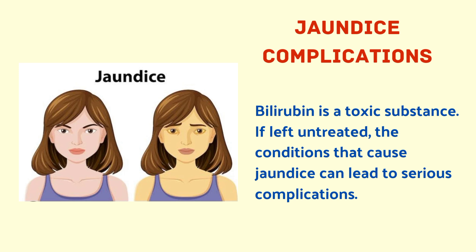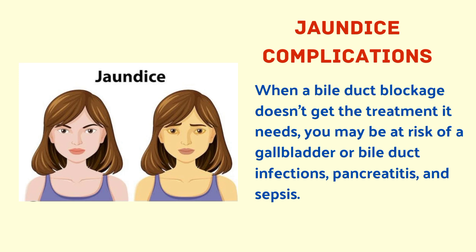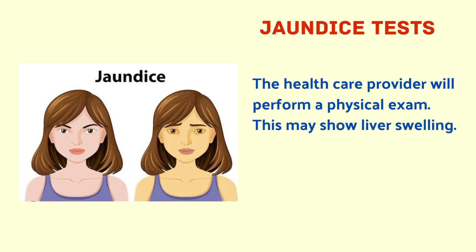Now let us see the complications of jaundice. Bilirubin is a toxic substance — if left untreated, conditions that cause jaundice can lead to serious complications. Untreated hepatitis can eventually lead to cirrhosis, liver failure, and increased risk of liver cancer. A bile duct blockage may lead to gallbladder or bile duct infections, pancreatitis, and sepsis. A severe buildup of bilirubin in the brain, known as kernicterus, can cause brain damage, particularly in newborns with severe jaundice.